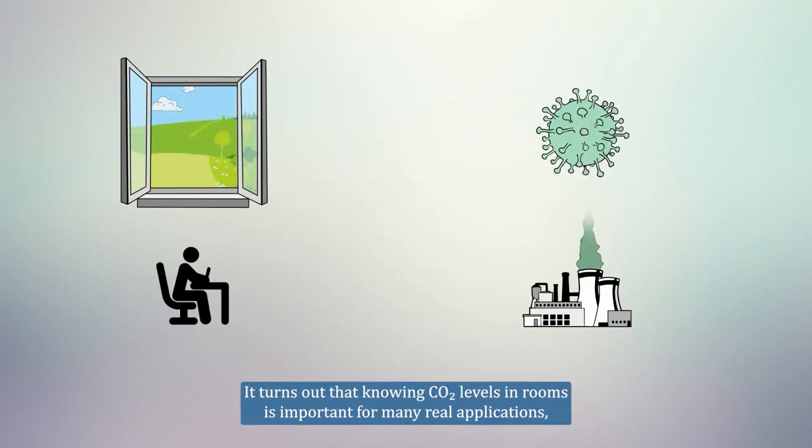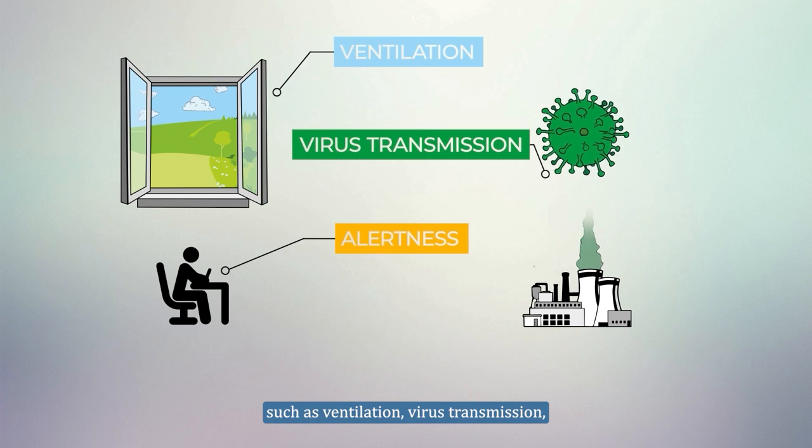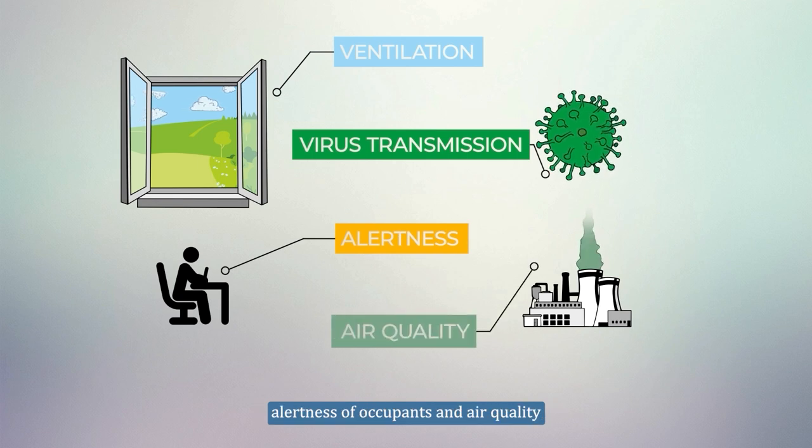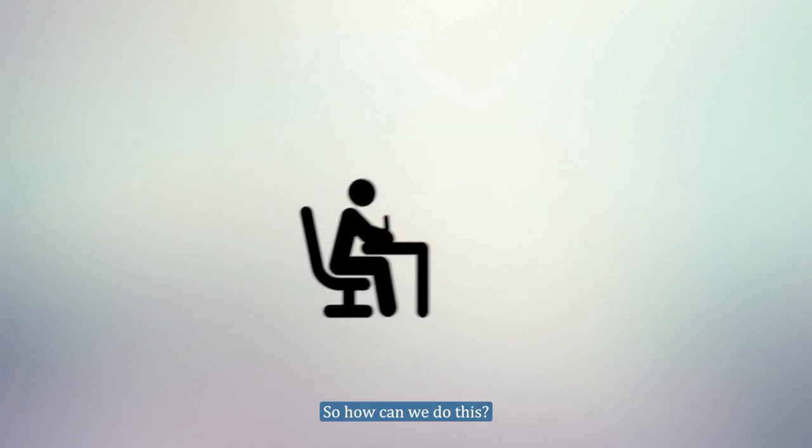It turns out that knowing CO2 levels in rooms is important for many real applications, such as ventilation, virus transmission, alertness of occupants, and air quality. So being able to mathematically model CO2 levels is an important problem, so how can we do this?